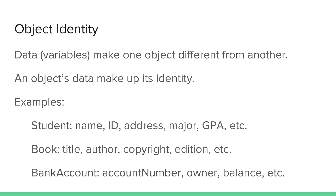Likewise, if I were defining a book, the title of the book, the author of the book, the copyright, and other information make that book uniquely identifiable — they make the book different from other books. And there are many examples of classes, each of which has its own defined data that make up the state of each object of that type.